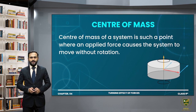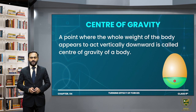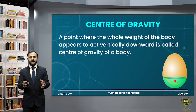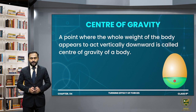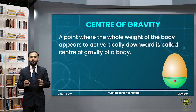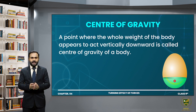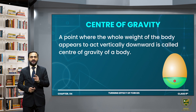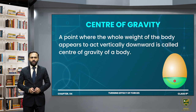The next term is center of gravity. All matter in this world is made up of atoms or particles, and gravity acts on every particle, attracting it downward towards the center of the earth. The combined downward force of all particles acts through one point — that is called the center of gravity. So, a point where the whole weight of the body appears to act vertically downward is called the center of gravity of the body.